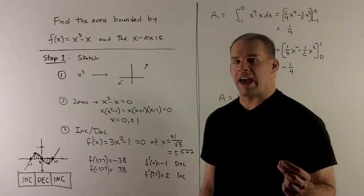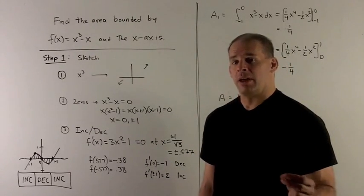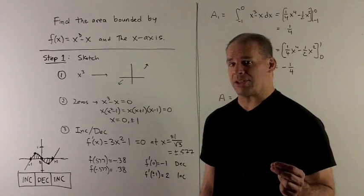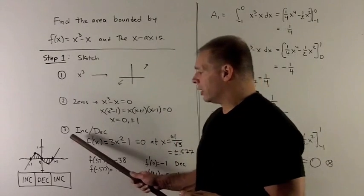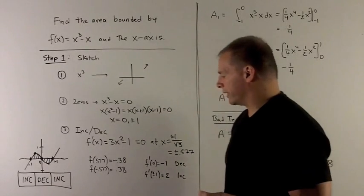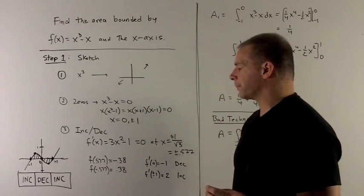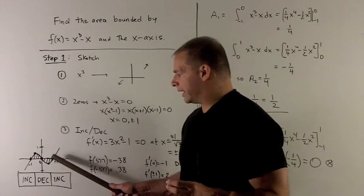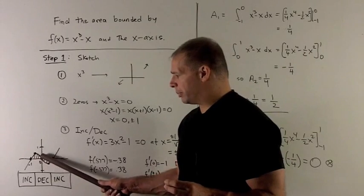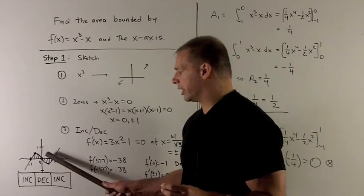We could go for concavity. That'll give us a prettier graph, but all we really care about is where we're positive or negative. When I connect the dots and consider the behavior at infinity, we get this graph of this function. We note for the area to get the boundary with the x-axis, that's going to be this region here and this region here.